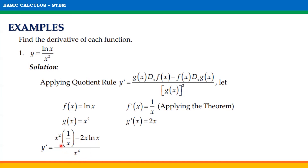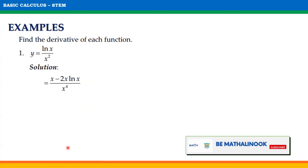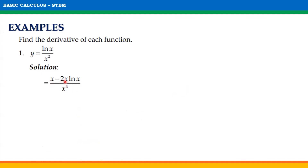we will get (x² · (1/x) - 2x · ln(x)) / x⁴. Multiplying x² times 1/x, we have (x - 2x·ln(x)) / x⁴. Since we have a common factor x in both terms at the numerator, we may factor out x to get x(1 - 2·ln(x)) / x⁴. Dividing x and x⁴, the final answer is (1 - 2·ln(x)) / x³.